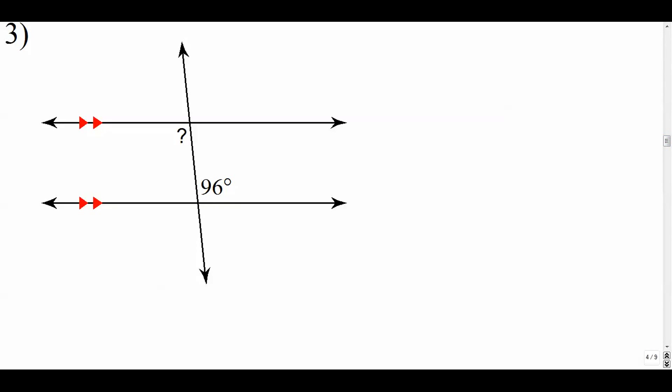Number three. Pause it and give it a shot if you'd like. Here we have parallel lines cut by a transversal and we're looking at a question mark right here and an angle right here. These are on different sides of our transversal. So we'll call them alternate and they're on the interior of our parallel lines. So we refer to them as alternate interior angles and alternate interior angles have the same measure. So this one's 96 degrees as well.